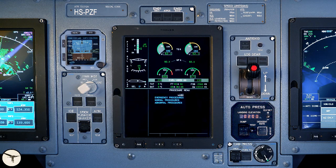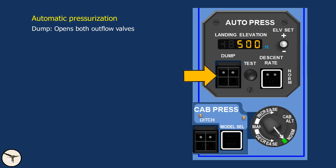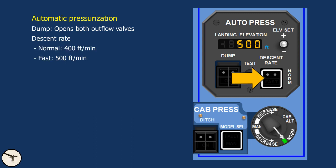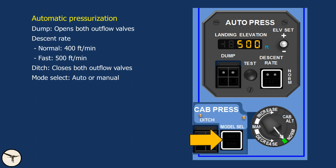Next we have the panel for the automatic cabin pressurization system. It is very easy to use — before takeoff you set the elevation of the destination airport to the nearest hundreds of feet and the system does the rest. The dump push button opens the outflow valves and must only be used when called for by a checklist. The descent rate push button, when pushed in, increases the cabin pressure descent rate from 400 to 500 feet per minute — used when descending more than 2,000 feet per minute for a prolonged time. The ditch push button closes the outflow valves and is used when about to land on water. The other controls are for manual operation.